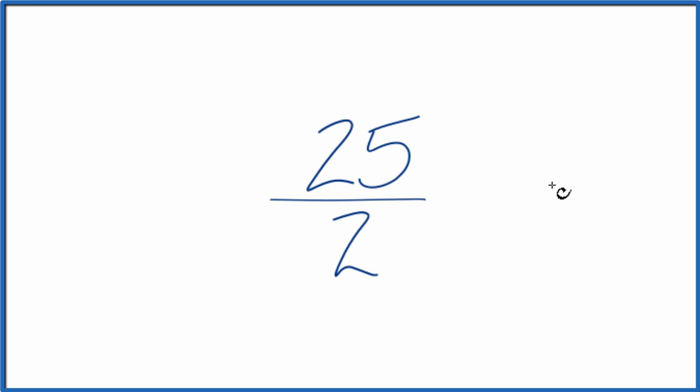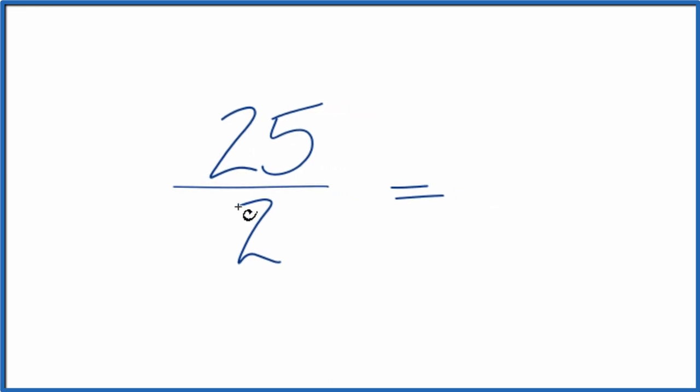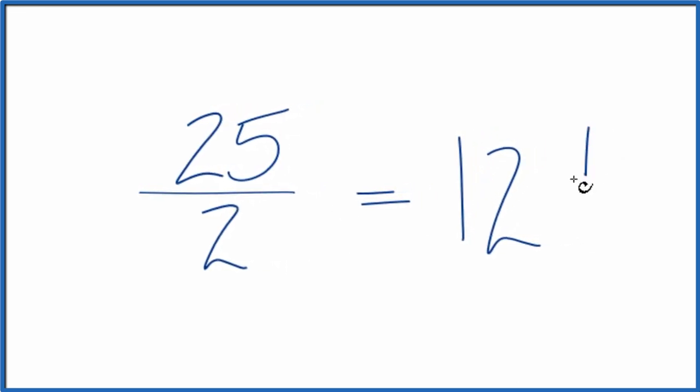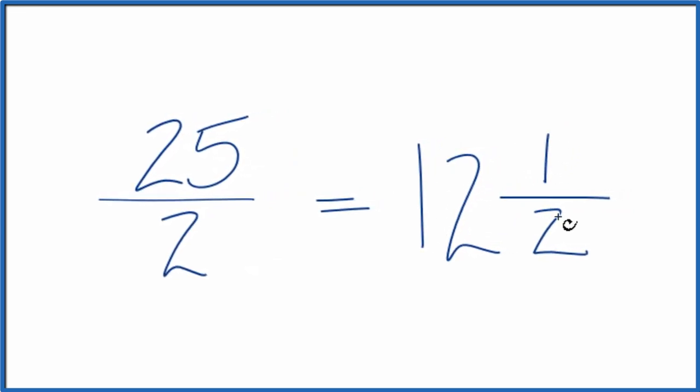The only thing we can do is convert this to a mixed number. Right now, this is an improper fraction. We have the numerator larger than the denominator. So 2 goes into 25, 12 times. 12 times 2 is 24 with 1 left over. We bring the numerator across and we get 12 and 1 half.